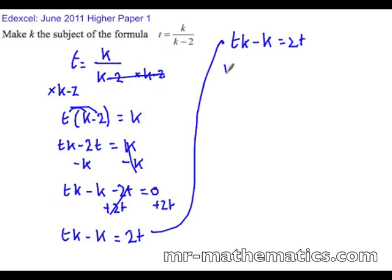Now we're going to factorize the left hand side for k. So it becomes k lots of t minus 1 equals 2t.